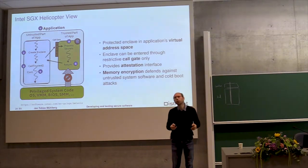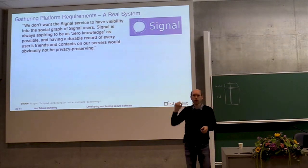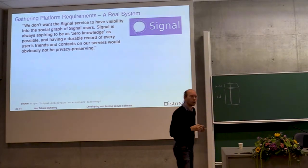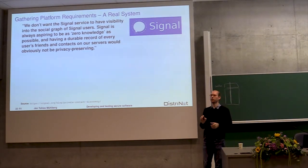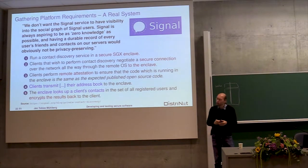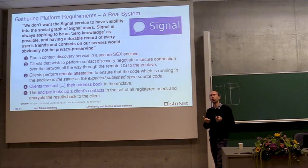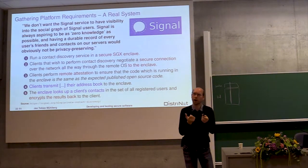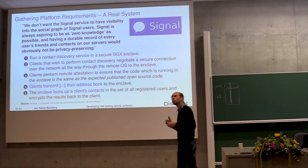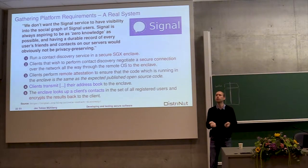You're able to isolate this piece of software completely from most of your application, from your operating system, and even from cold boot attacks where someone would try to use a machine reset to get to data — because even the memory where this enclave's data and code is stored can be encrypted. Signal, the instant messaging application, is employing these techniques right now to build a system that allows you to preserve your privacy while syncing contacts. The application on your mobile phone connects to that enclave and can attest it.